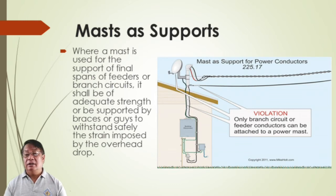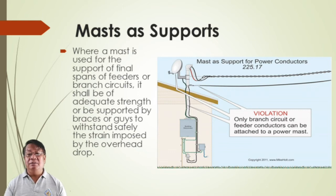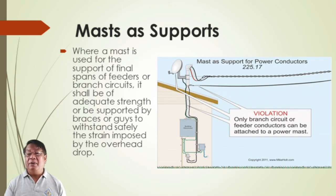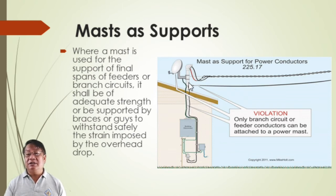For masts and supports, where a mast is used for the support of final spans of feeders or branch circuits, it shall be of adequate strength or be supported by braces or guides to withstand the stress imposed by the overhead drops. Only branch circuit or feeder conductors can be attached to a power mast. Masts should not be used as a support for power conductors — we must have separate supports.